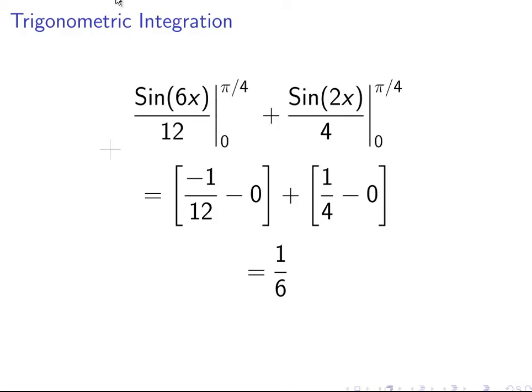And so just to add those two values together. Minus 1 over 12, plus 1 quarter. That works out to be 1 sixth. So our answer is 1 sixth. Well perfect.